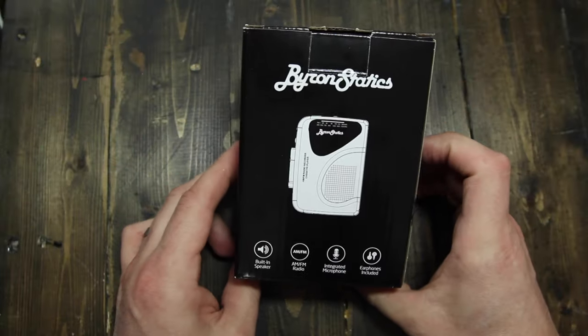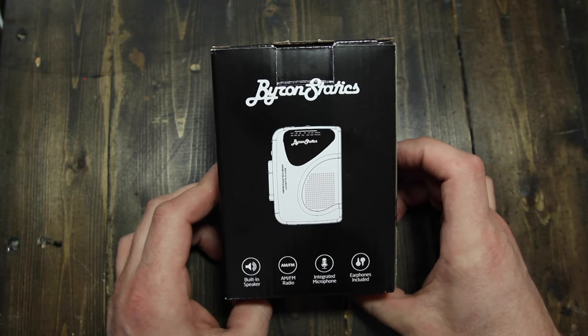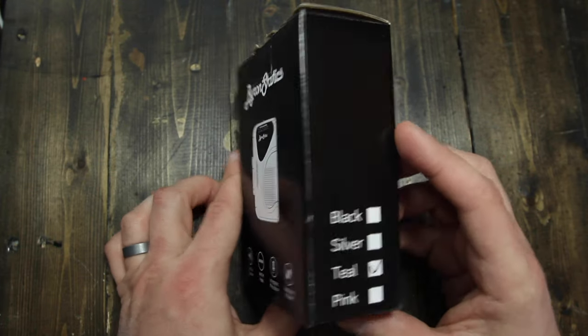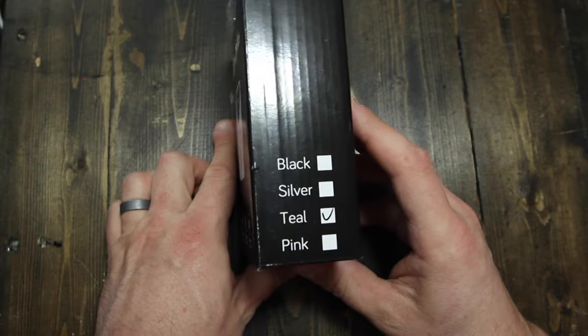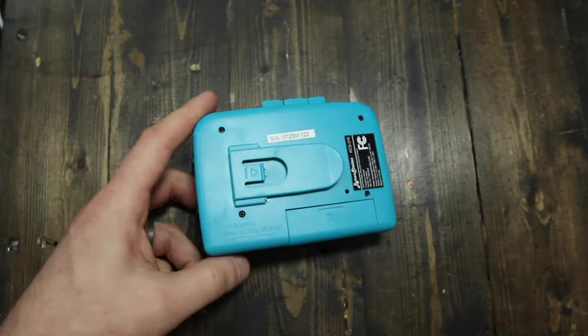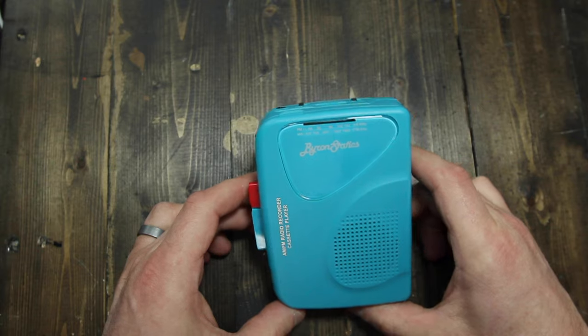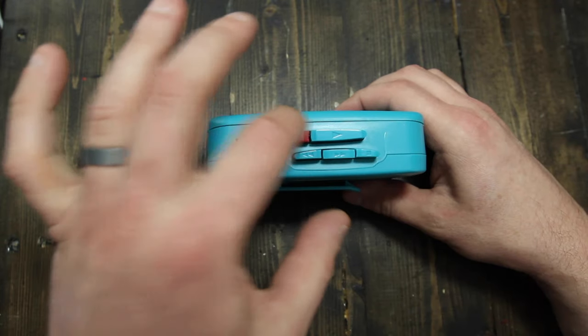For this project, I'm using this Byron Statix brand cassette player. It's the cheapest model you'll find on Amazon, and it comes in a few different finishes. Obviously, I chose teal. The cool thing about these is, even for the price, they have features like an AM-FM radio, an onboard speaker, and a record function.